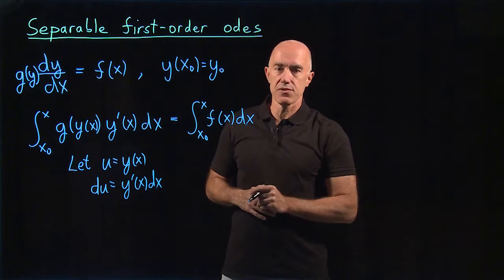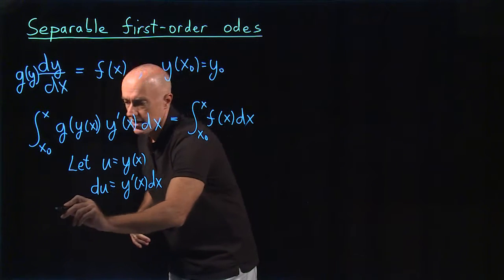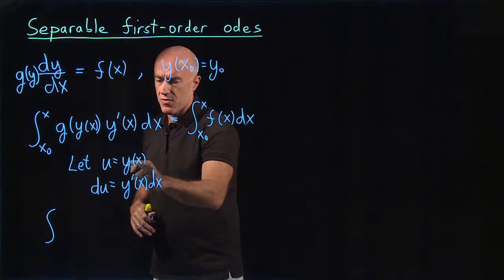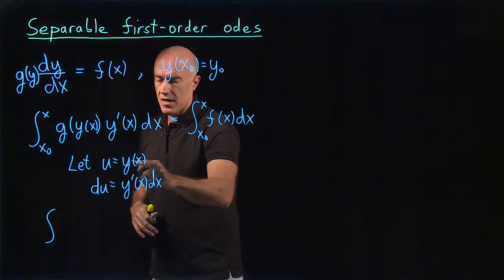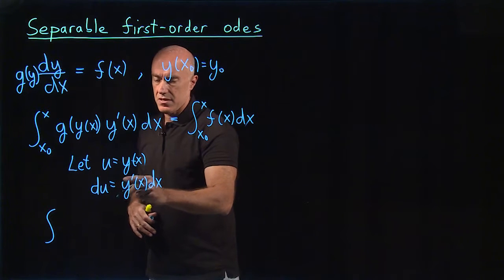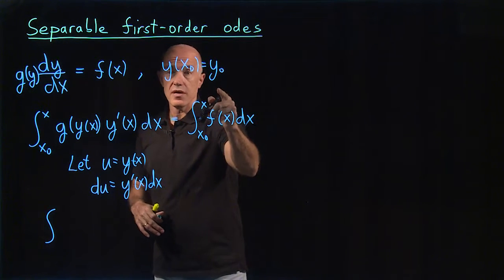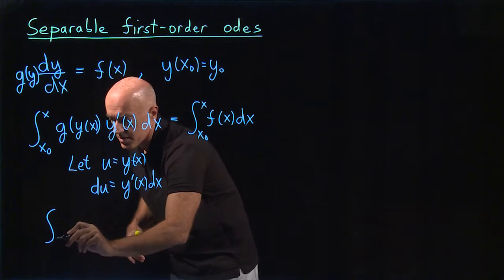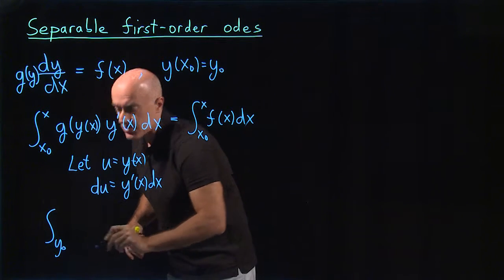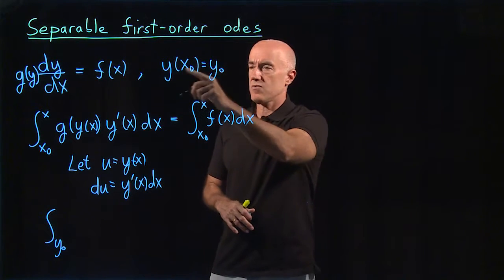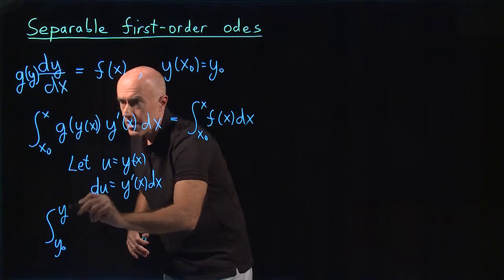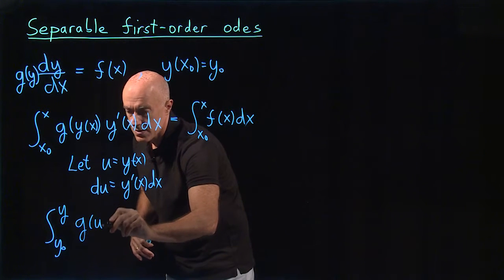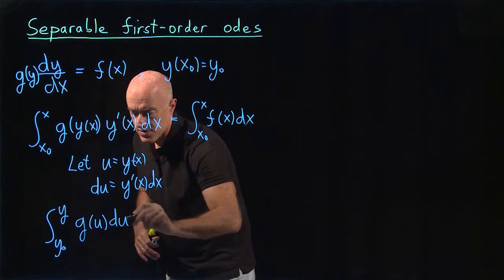Using this substitution, we write the integral. So when x equals x naught, then we have y of x naught, which will be y naught. That's our initial condition. Y of x naught is y naught. So we integrate from x naught to x, y of x is what we call y. And then we have g of u du with the substitution.